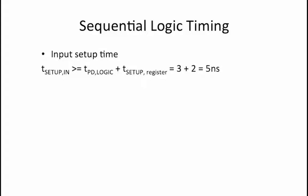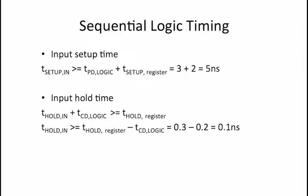Once the n input becomes invalid, the input to the register will become invalid after the contamination delay of the logic. n must stay valid long enough to ensure that the input to the register does not become invalid before the register's hold time.